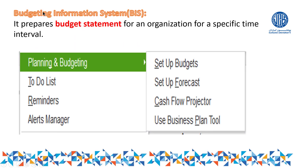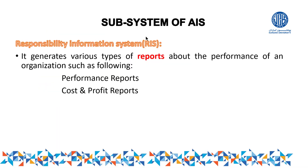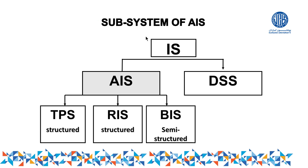The next part is BIS — Budgeting Information System. The responsibility of this section is to prepare budget statements for the organization for a specific time period. In QuickBooks, there is a section for planning and budgeting, which covers setting up a budget, forecasting, making cash flow statements, and using business planning tools. BIS simply means making a budget statement — estimating the future inflows and outflows.